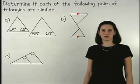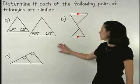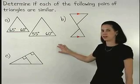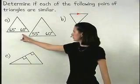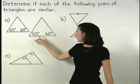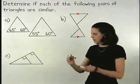In this example, we're asked to determine if each of the following pairs of triangles are similar. In part A, notice that we're only given one pair of congruent angles, the 60-degree angles.